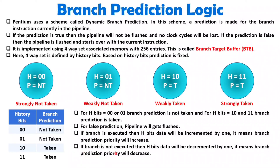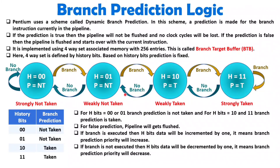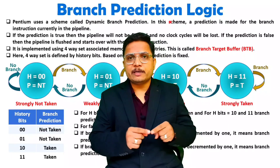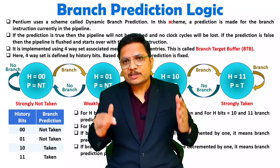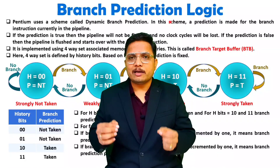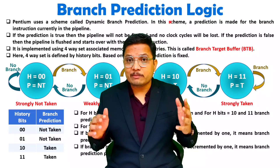For H = 00 and H = 01, you will not consider prediction as taken. But for H = 10 and H = 11, by default the prediction is that the branch will be taken, and based on that you prepare your pipeline. You should also know that if a branch is not executed, the history bit gets decreased by 1, so the new priority for branch taken or not is redefined. That is how branch prediction works. With this branch prediction logic, the Pentium processor predicts branches with up to 95% accuracy. So in most cases instructions don't need to be flushed from the pipeline, though there will be some cases where your prediction is false and you will have to flush again. Thank you for watching.